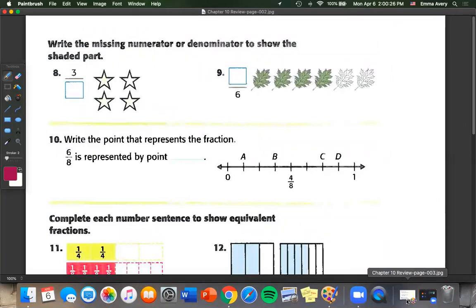So next page, we're going to write the missing numerator or denominator to show the shaded parts. So it's kind of hard to see on this copy, but I filled in your copy. Three of these stars are filled in. So one, two, three of the stars out of a total four.